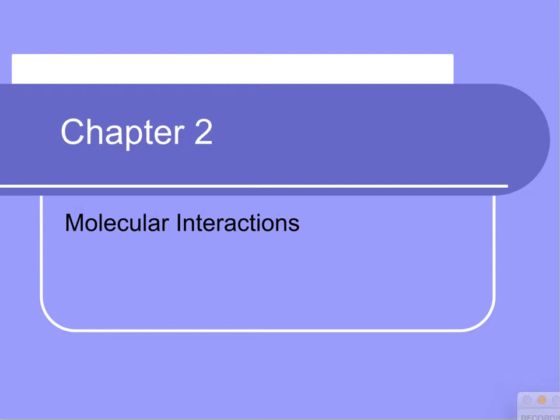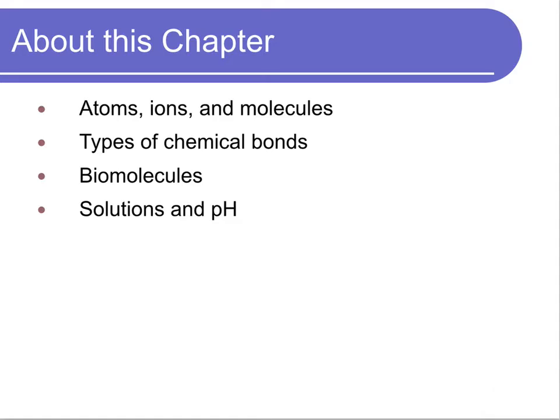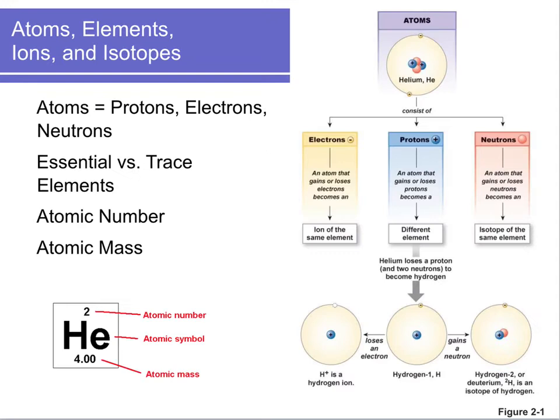Hi, welcome to chapter two on molecular interactions. In this chapter we're going to talk about atoms, ions, and molecules — a little bit of chemistry including chemical bonds. We'll talk about our different biomolecules and then end with solutions and pH.